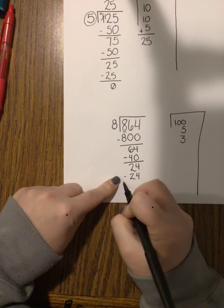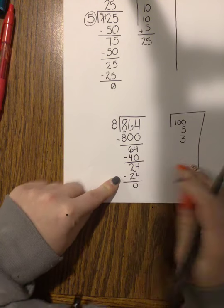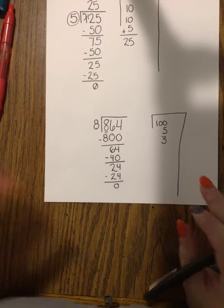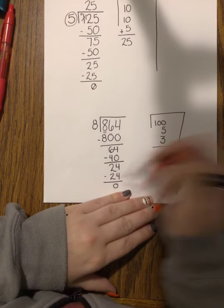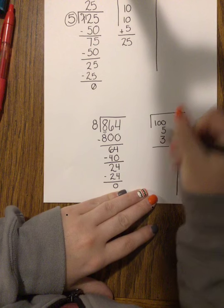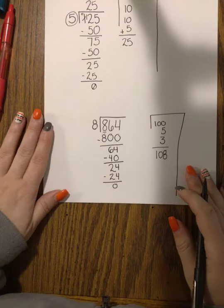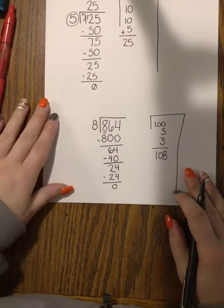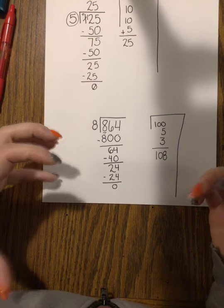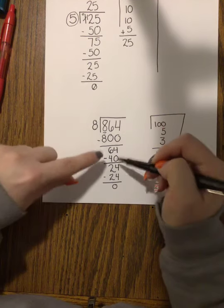Partial quotients is all about taking it out in chunks instead of just solving the entire problem. So when I add these together, my final answer is 108. So remember, with partial quotients you're just taking out big chunks, breaking this number apart into little pieces so it's a little bit easier to divide.